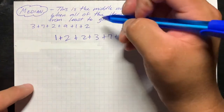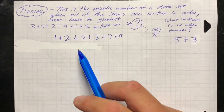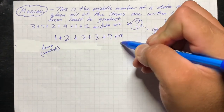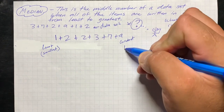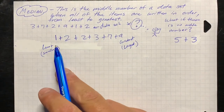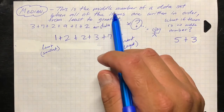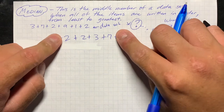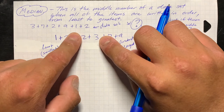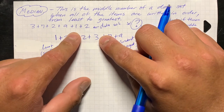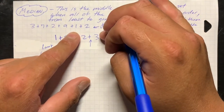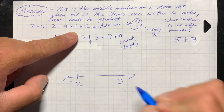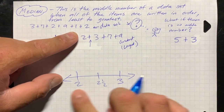I took all the numbers from that data set and listed them in order from the least — the smallest number — to the greatest — the largest number. One is the smallest number and nine is the largest. We need to find the number that is in the middle, so we start from both ends: one and nine. Counting inward, two and three are in the middle. So the median will be in between two and three — the number on a number line between two and three is two and a half.